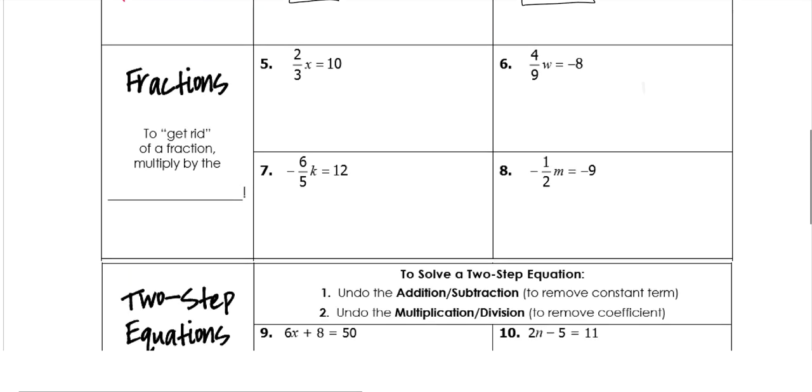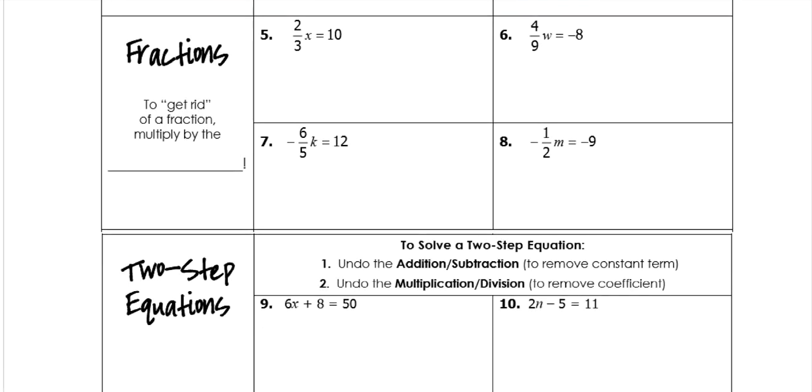Now, in this next section, we're dealing with fractions. So to get rid of a fraction, you multiply by the reciprocal, which just means you flip it around. So to get rid of 2 thirds, we multiply by its reciprocal. So you flip it upside down. So it'll be multiplying by 3 over 2 on both sides.